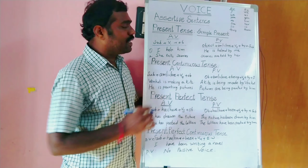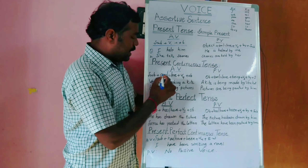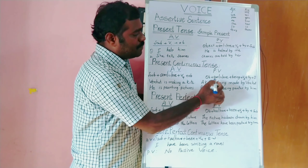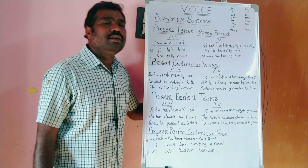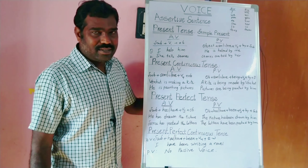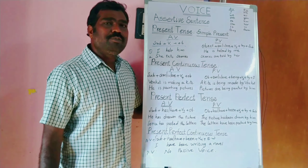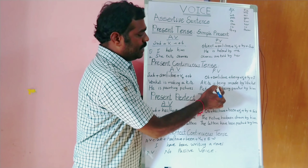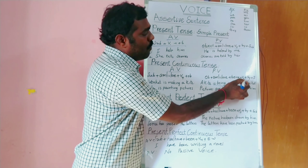Second one — present continuous tense. See the structure in active voice and passive voice. Active voice: subject + am/is/are + V4. Passive voice: object + am/is/are + being + V3 + by + subject. For example: 'Venkat is making a kite' becomes 'A kite is being made by Venkat.'